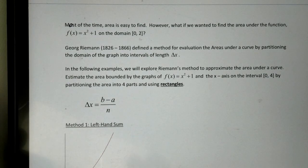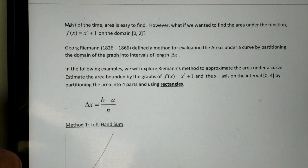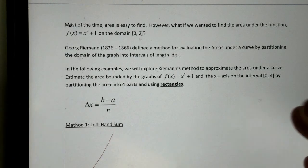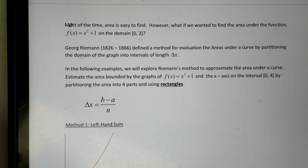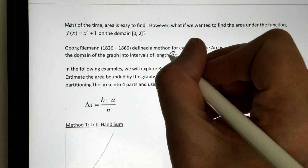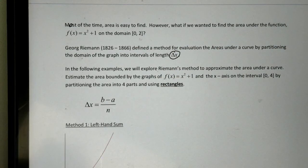Enter George Riemann. He helped to define a method for evaluation of areas under a curve by breaking the graph, the domain of the graph, into intervals of length delta x. In other words, change in x. In the following examples, we're going to explore Riemann's method to approximate the area under a curve.